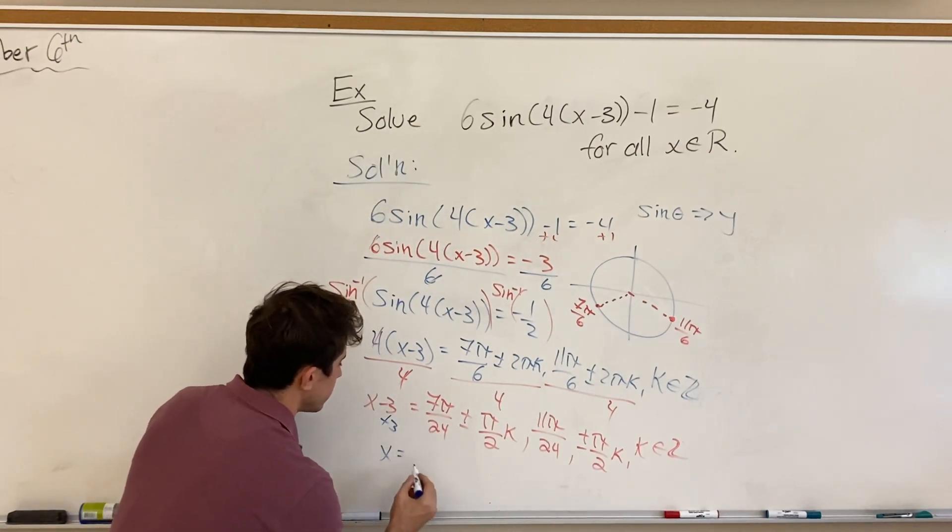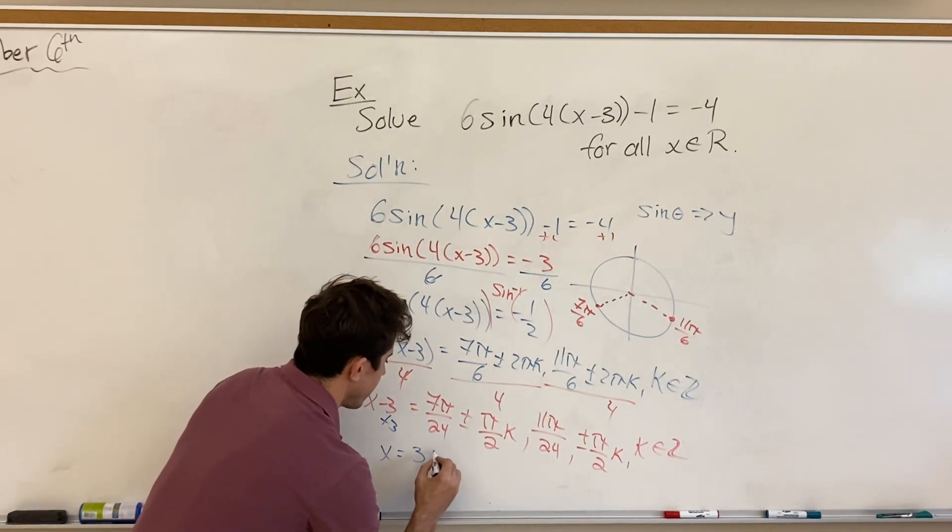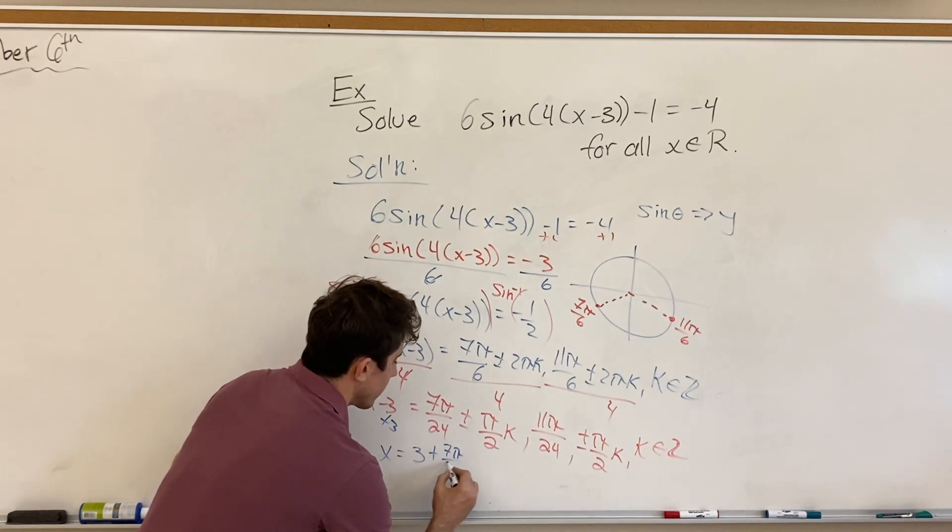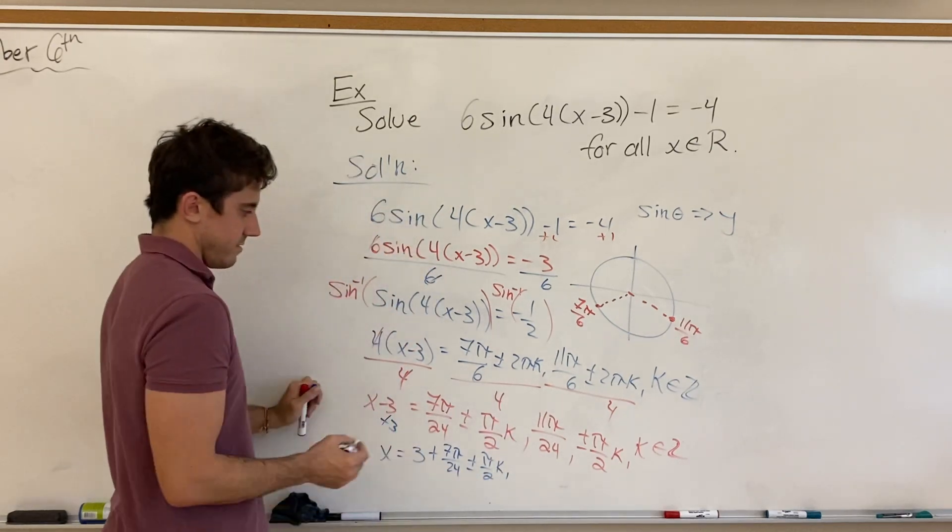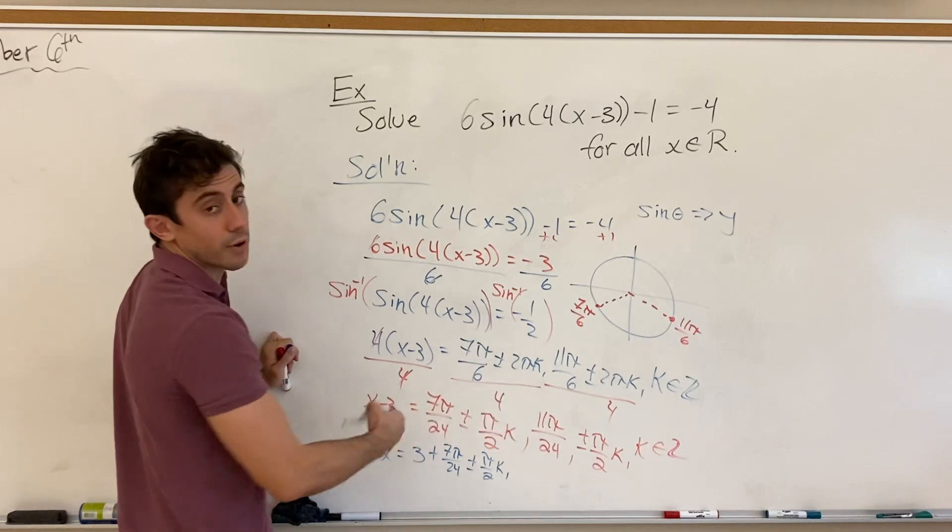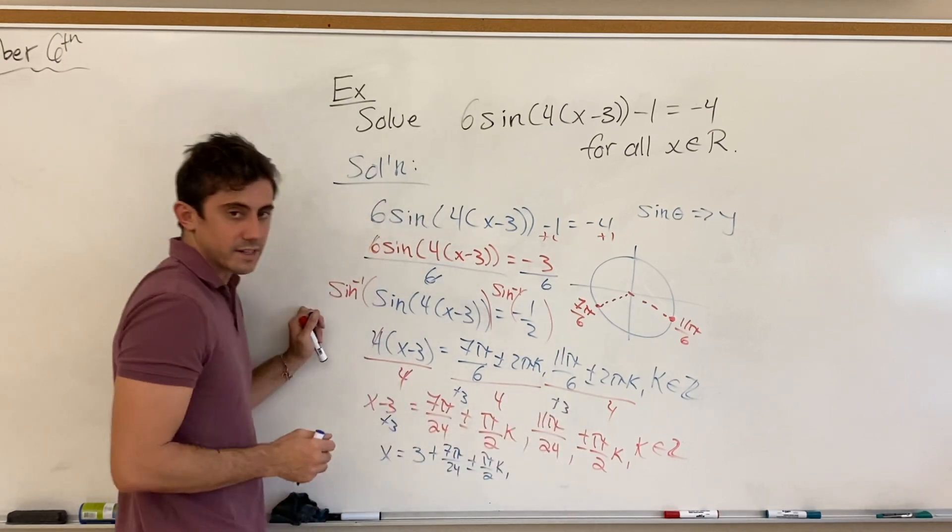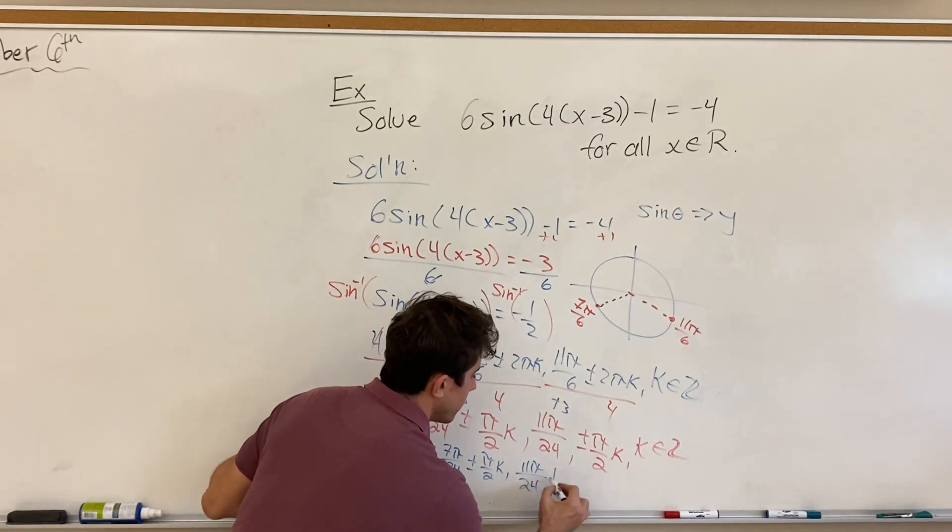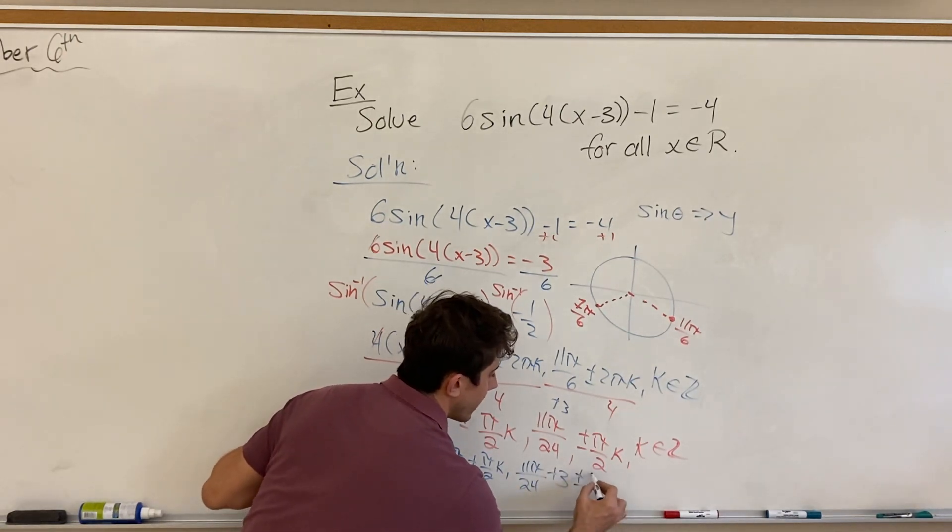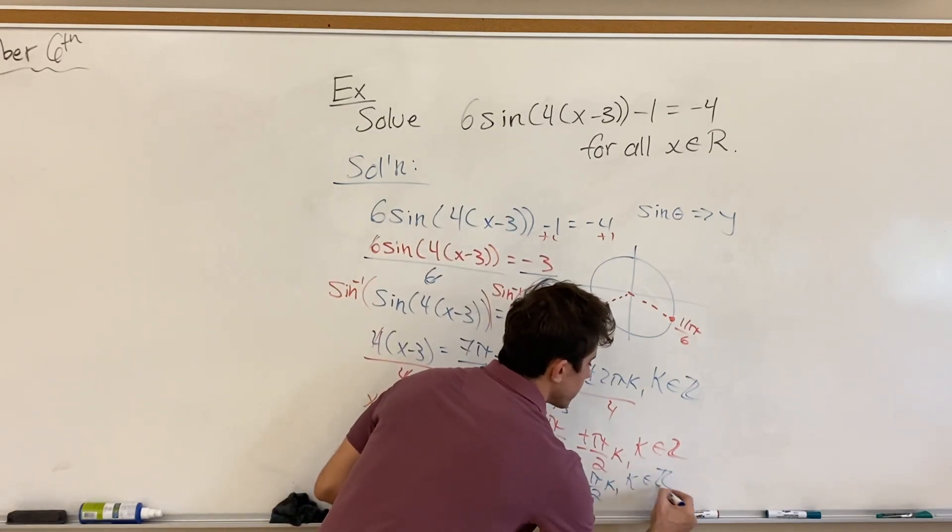And so we'll have x is equal to 3 plus 7 pi over 24 plus or minus pi over 2k. We'll have, again, adding 3 to both set of solutions. We're adding 3 to both sides. And so we'll have 11 pi over 24 plus 3 plus or minus pi over 2k. And in both instances, we remind ourselves that k can be any integer multiple.